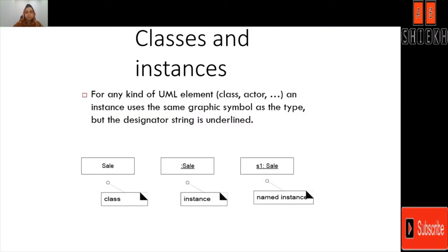Diagram notations. Here we have classes and instances. For different UML elements such as class, actor, instances, or a named instance, we have a graphic symbol. For example, this particular cell is representing a class. This column at the beginning of the cell with an underline is representing an instance, and this particular underlined name, then colon, then sale, is representing a named instance.